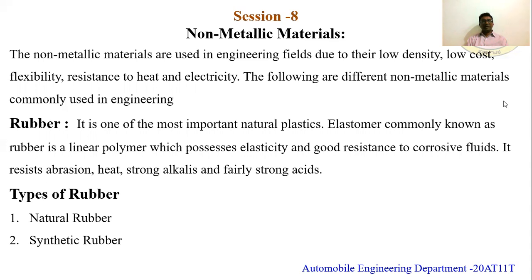What is rubber? Rubber is a natural plastic, also called an elastomer. It is a polymer which has the properties of elasticity. It has good resistance to corrosion from fluids, abrasion, heat, alkalis, and strong acids.